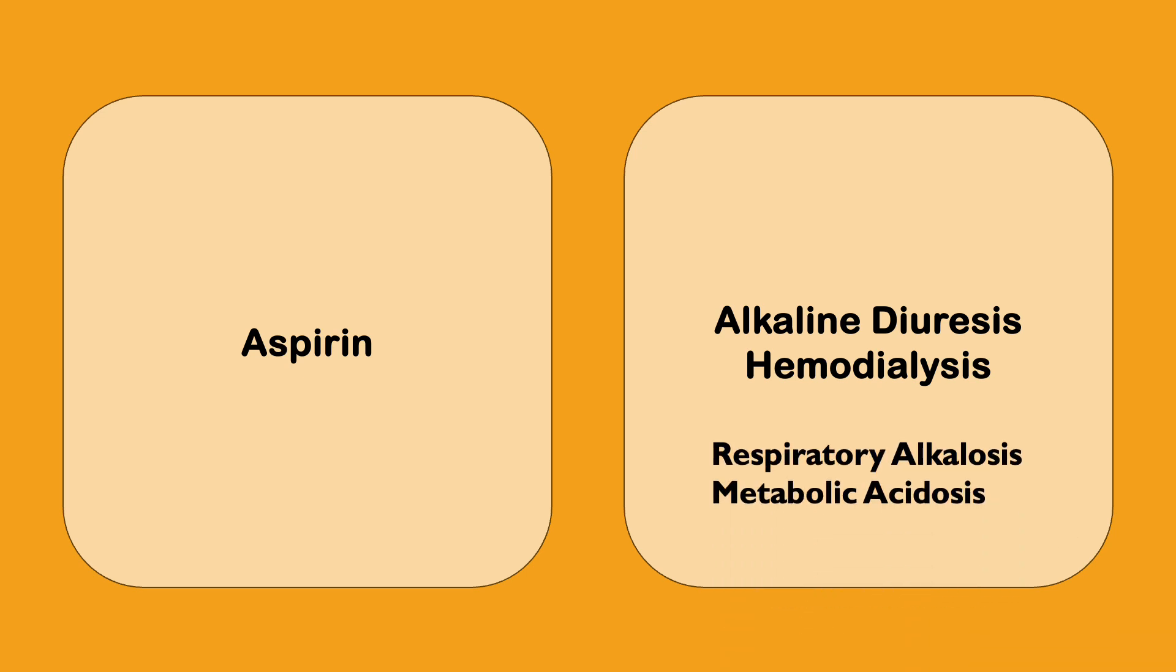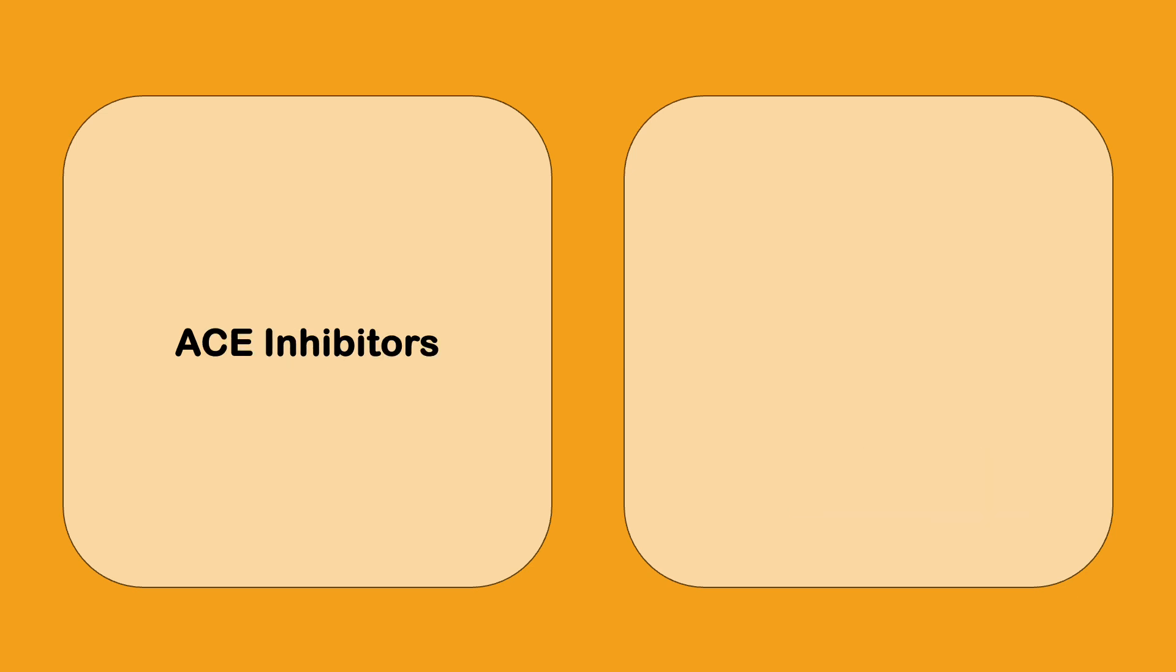ACE inhibitor, if somebody's overdosed on ACE inhibitor intentionally or accidentally and they come in with hypotension, the first step would be giving fluids. But if it's not responding to fluids, there's going to be shocking for you, it is naloxone. The concept is ACE inhibitor induces hypotension acting on mu receptors and naloxone acts on mu receptors.